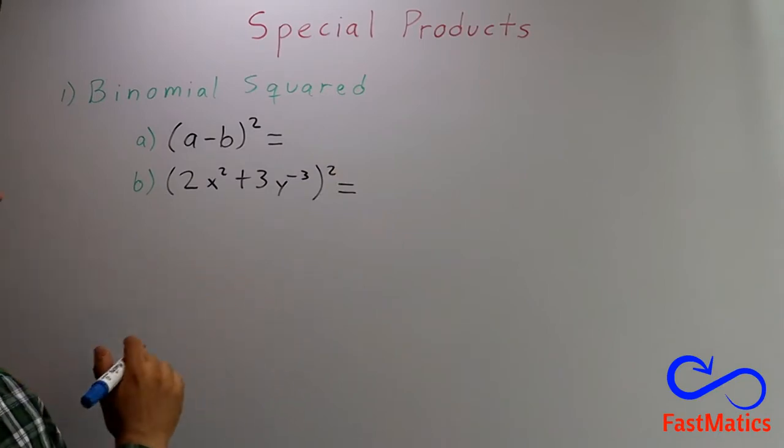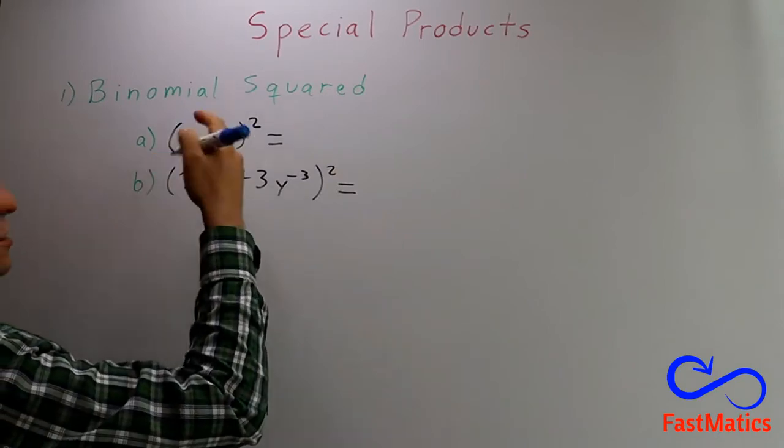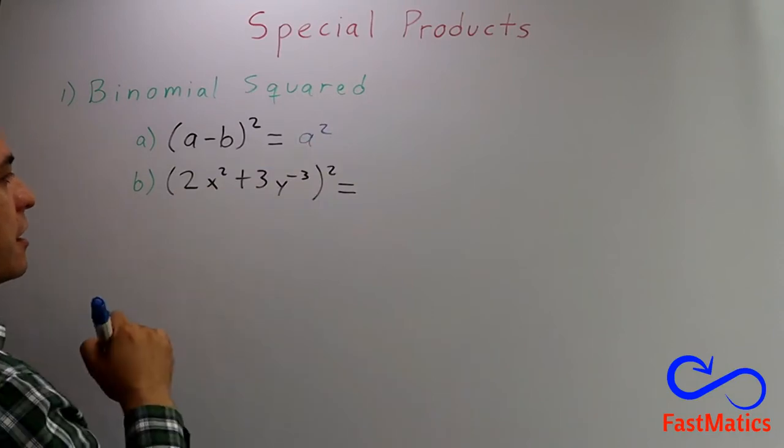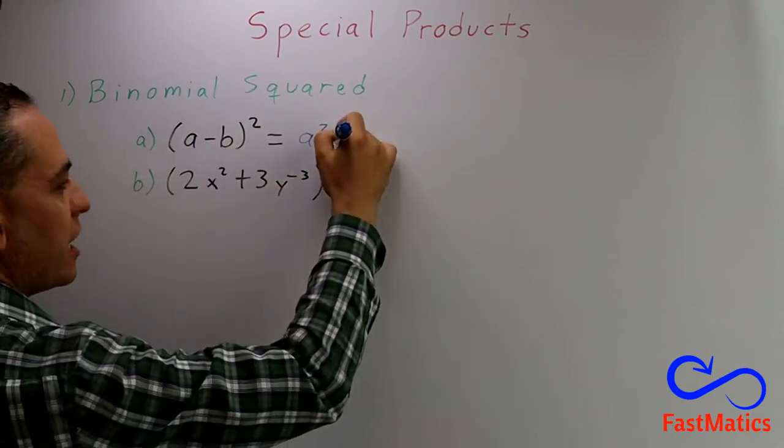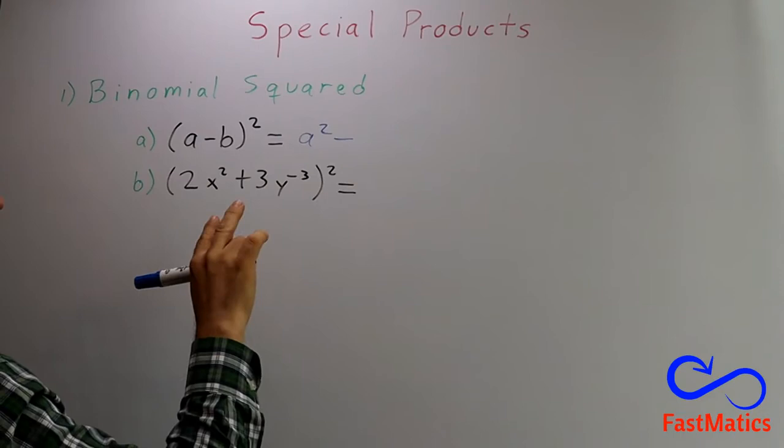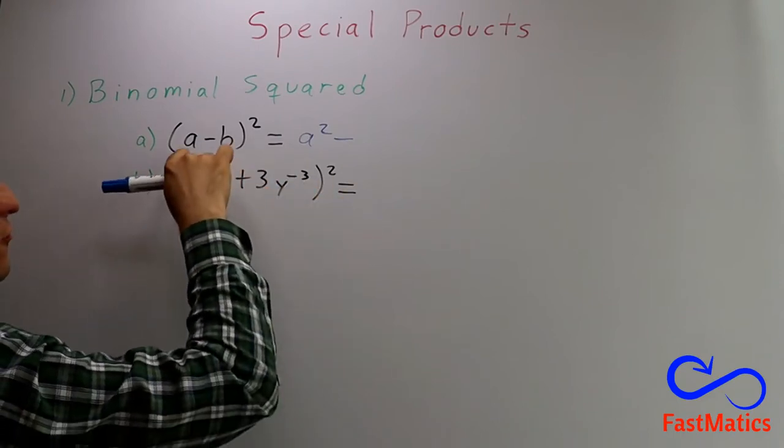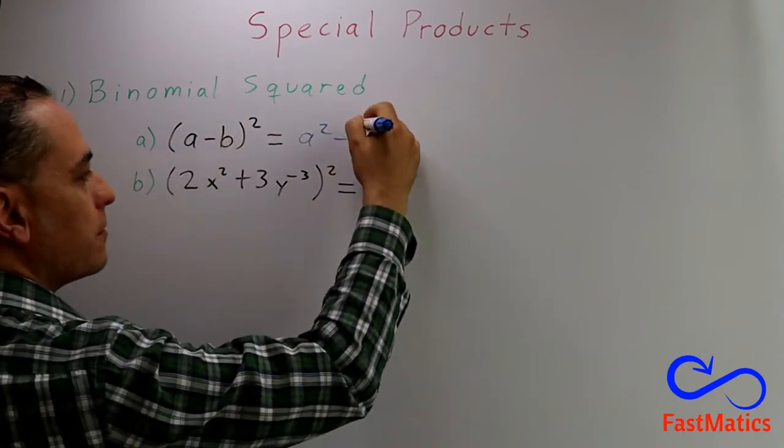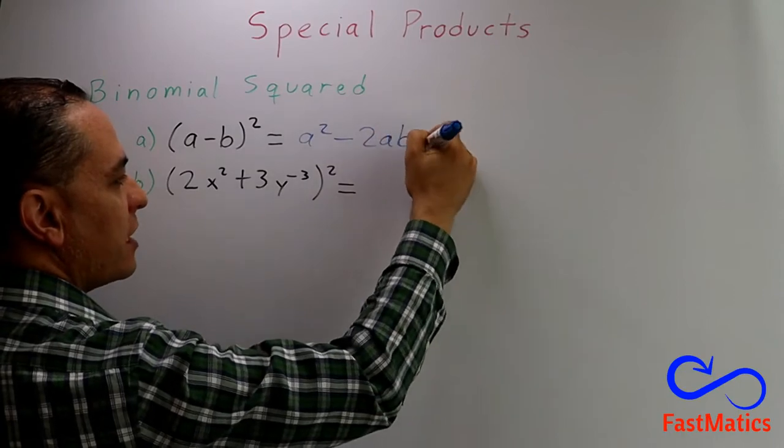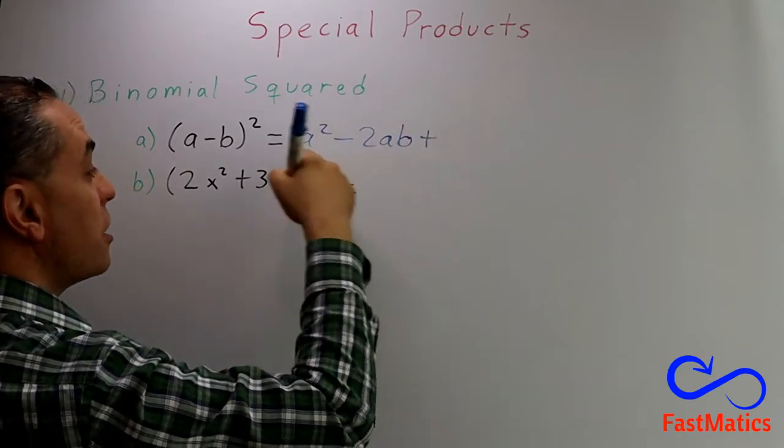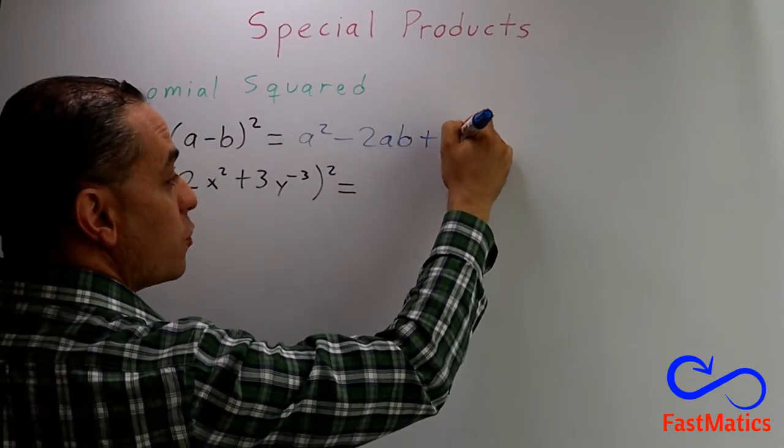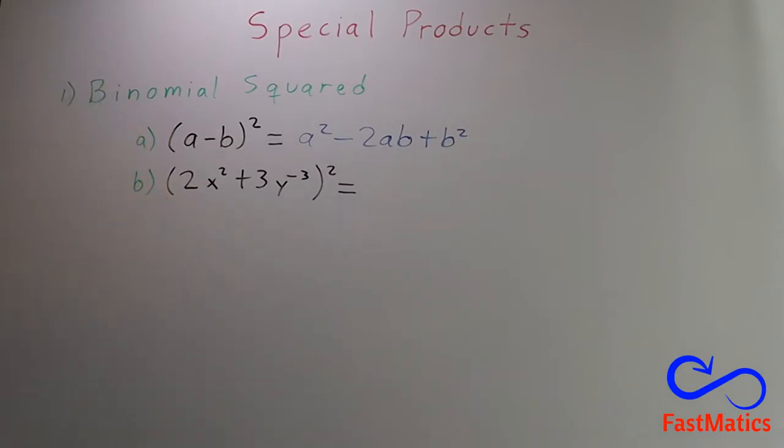Then what's the rule? We take the first term squared. After that we copy the sign. We make twice the first by the second. And finally, plus, always plus, the second term squared. And that's it.